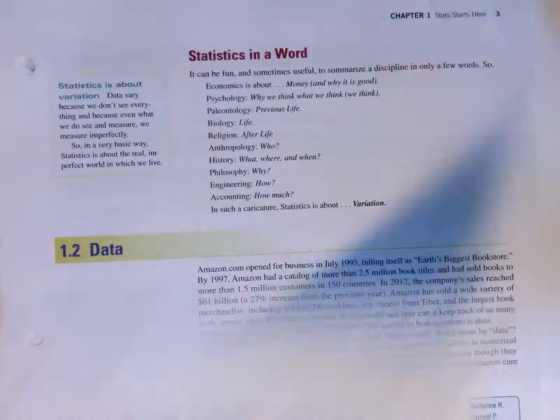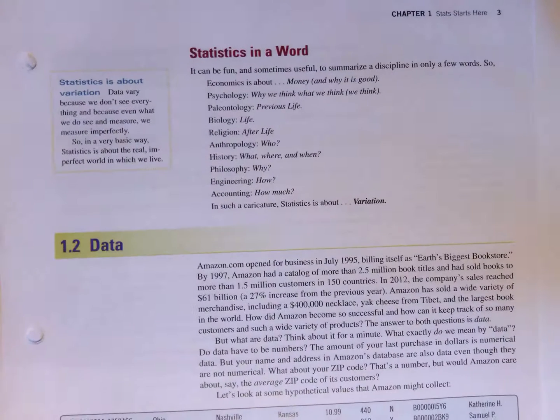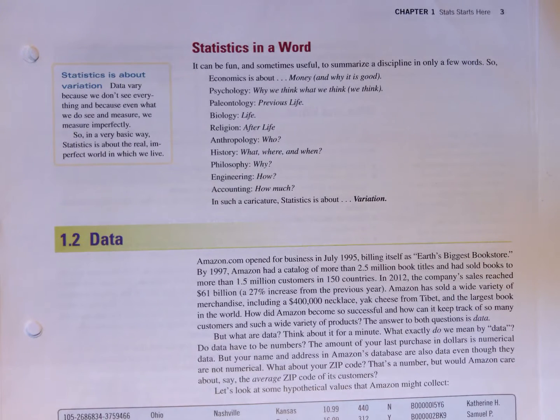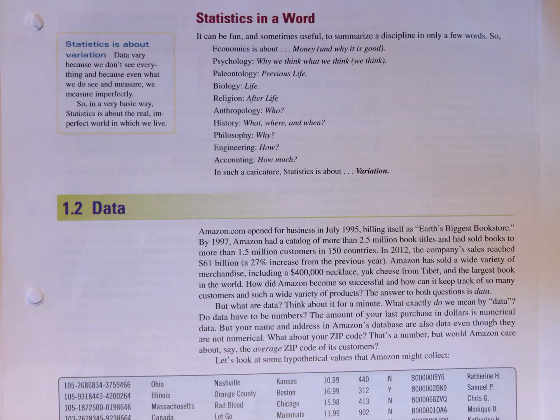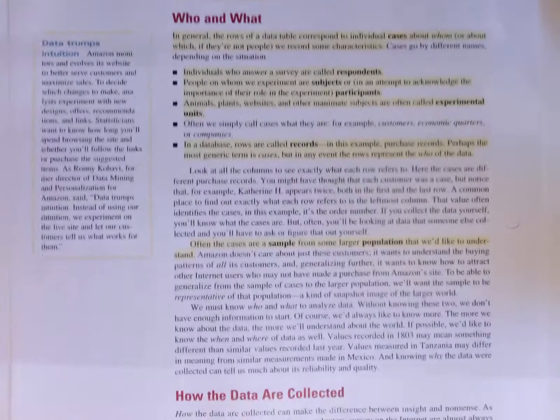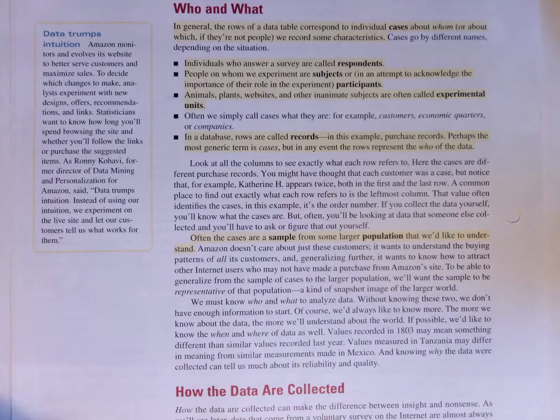This section provides a definition of statistics and our first introduction to data and thinking about here how values that Amazon might collect are provided in this example. I urge you to take a close look at that. It's a pretty short chapter, but it really sets the stage for a number of the questions we're going to be trying to answer throughout the semester. This question of who and what, how data are collected, are very important for us in thinking about statistics and modeling.